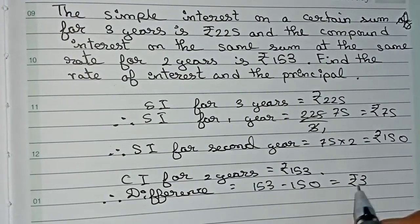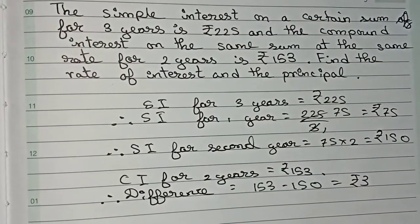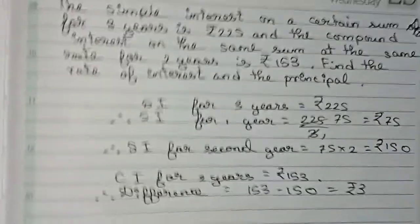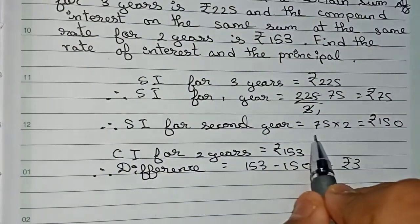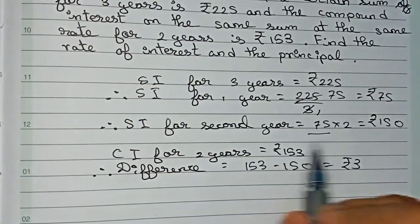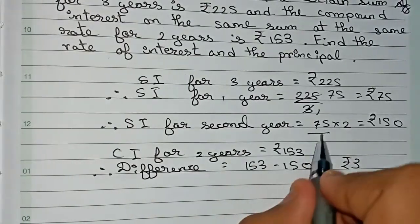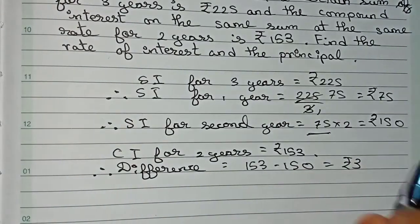This ₹3 is gained when the interest is compounding from the first to second year. Therefore, this ₹3 is added to the first year's SI of ₹75. If we take ₹75 as the principal and the interest as ₹3, we can find the rate.